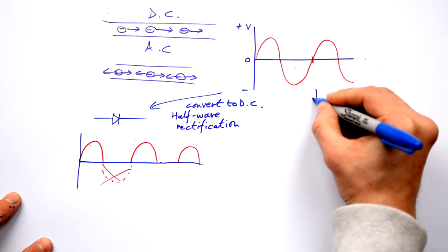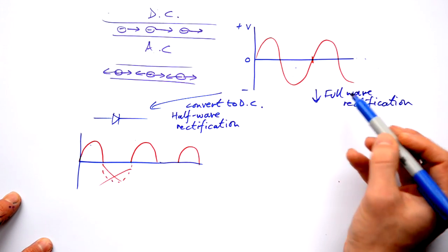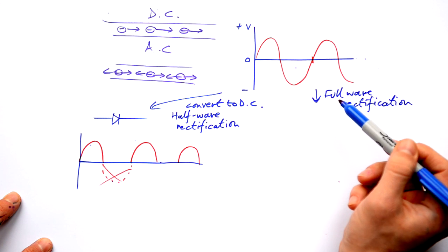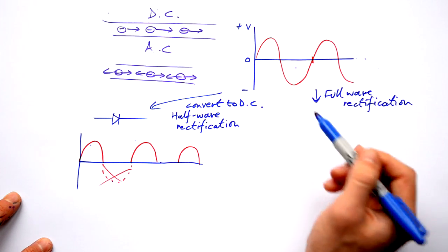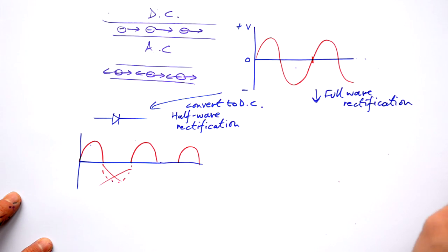A better way of doing it is full wave rectification. Now you can accomplish this if you've got a dynamo by putting a split ring commutator on, so you're flipping the current every half a turn, so you end up with the electrons flowing in the same direction.